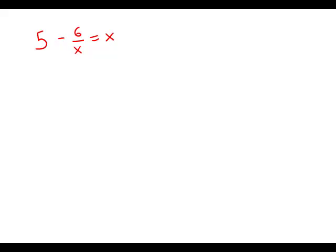If 5 minus 6 over x equals x, then x has how many possible values? Well, the way we handle an equation like this — it has an x upstairs and also an x in the denominator — we're going to multiply both sides by x.